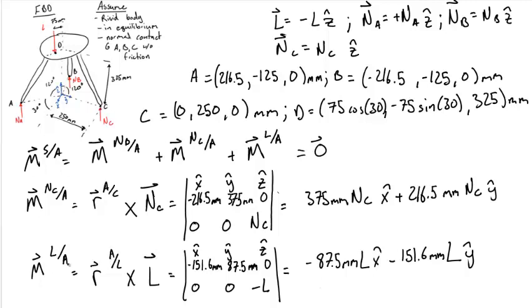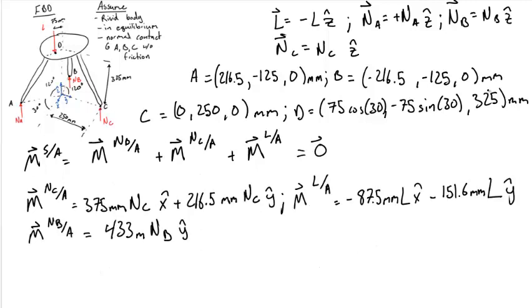Carrying out this cross product, we find the moment from L about A is equal to R_A to L cross L is equal to negative 87.5 millimeters L in the x-hat direction, and negative 151.6 millimeters L in the y direction.